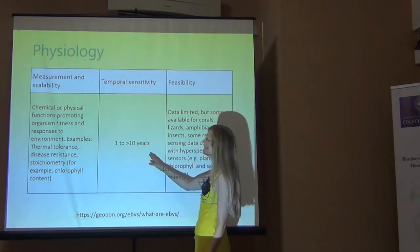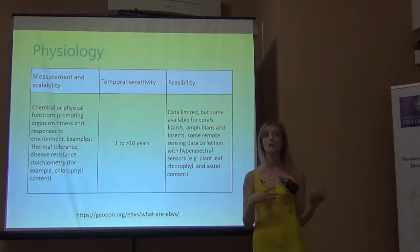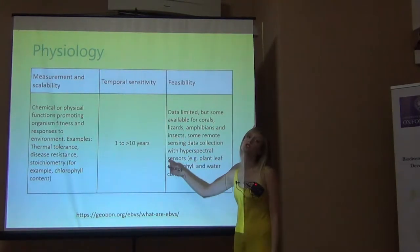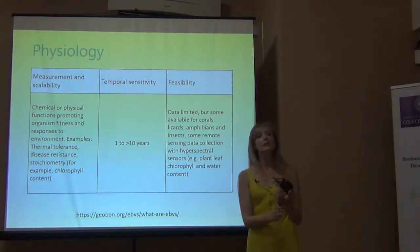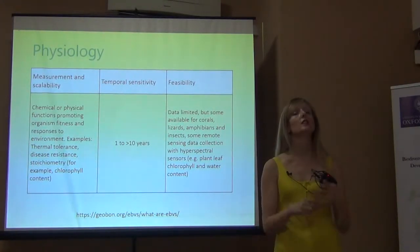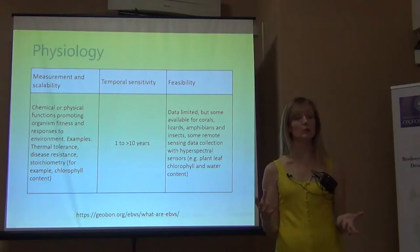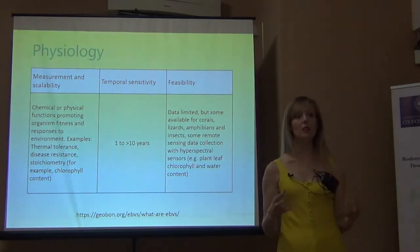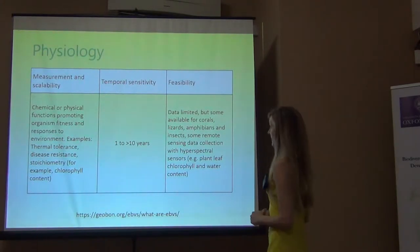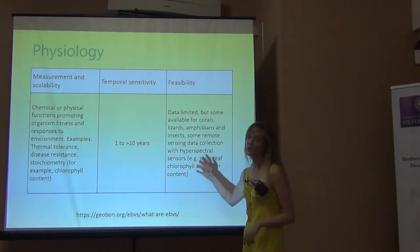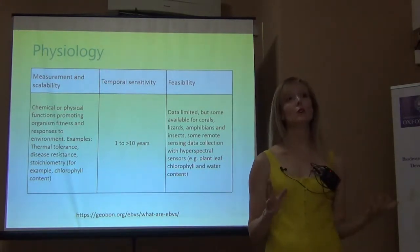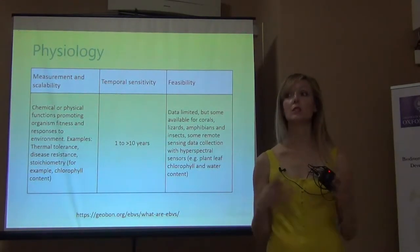The temporal sensitivity for physiology traits is anywhere from a year to ten years, and the data on this is extremely limited. For body size, morphology, and phenology, there are actually global datasets available — still limited in many regards, but they exist. But for things like physiology, the data are very limited and there are really no global datasets available, which is a problem.